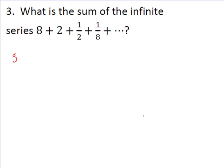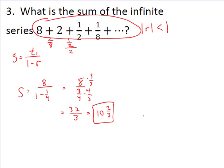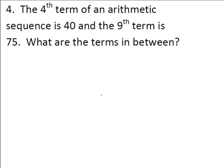For an infinite geometric series, the formula is simply S = t1 over (1 minus r). Remember, this only works when the absolute value of the ratio is less than 1. Here the ratios between terms are 2/8, 1/2 over 2, and 1/8 over 1/2, all equal to 1/4 — so the common ratio is 1/4. With t1 = 8, the sum is 8 over (1 minus 1/4) = 8 over 3/4. Multiplying by the reciprocal: 8 times 4/3 = 32/3, or ten and two-thirds.